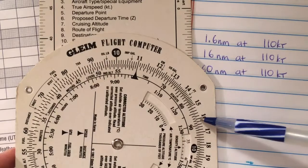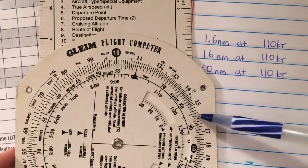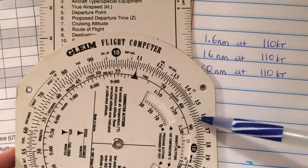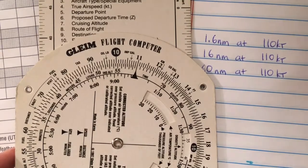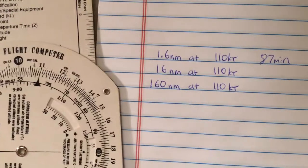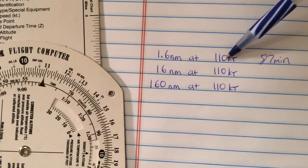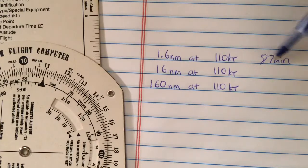The amount of minutes—what it's reading on the scale here is 87. Does 87 make sense for this problem? I'm only going 1.6 nautical miles at 110 knots. Would it take me 87 minutes? No.